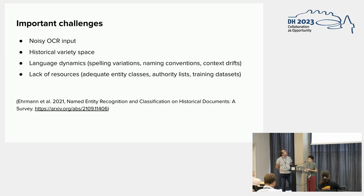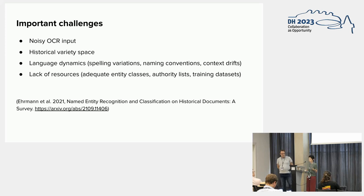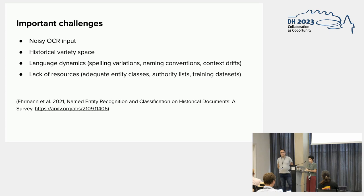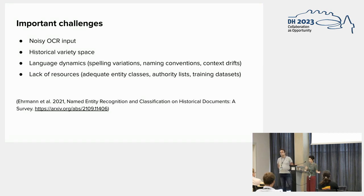There are a few challenges that motivate this lack of infrastructure, but more generally it's because we don't have nearly as many resources as exist for modern languages. We don't have adequate entity labels and classes, we don't have enough authority lists, we don't have enough training datasets. And then there are contextual problems like noisy OCR input — OCR is not nearly as good for ancient texts as for modern texts.